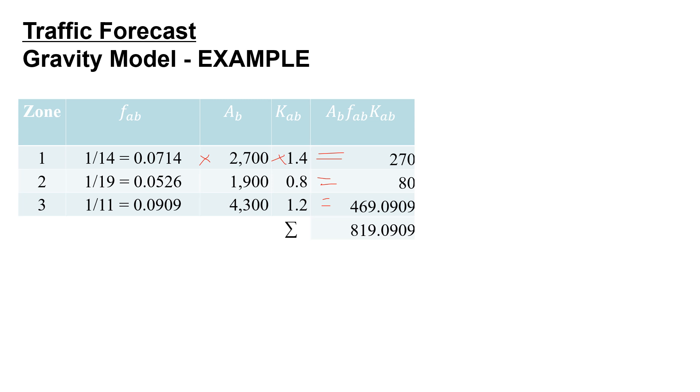We're going to sum this up so we get a total of 819.0909. And then we're going to divide each of these individual values by that sum.